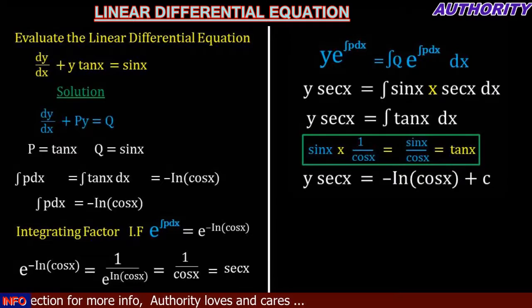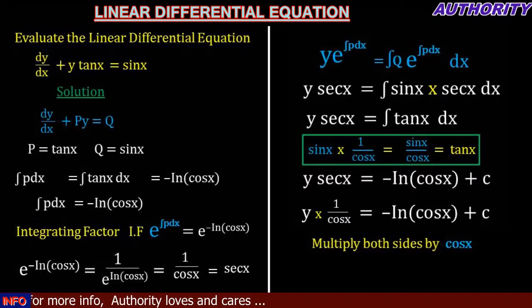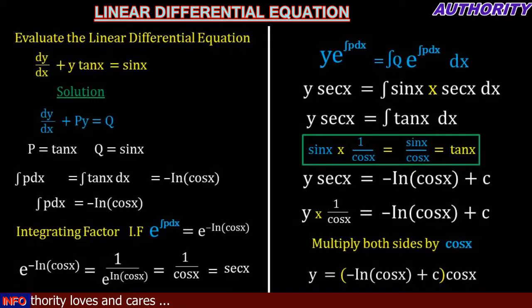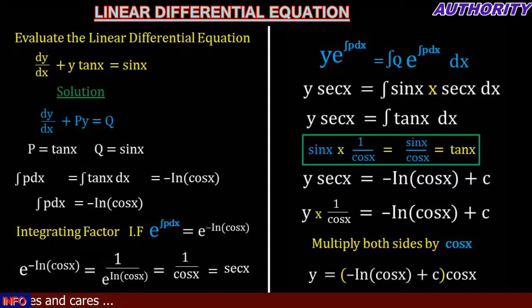Now we want to make y the subject. Since sec(x) is 1 over cos(x), we multiply both sides by cos(x). So y equals (-ln(cos(x)) + C)·cos(x). Therefore, the solution to the linear differential equation dy/dx + y·tan(x) = sin(x) is y = (-ln(cos(x)) + C)·cos(x). Thank you very much for watching.